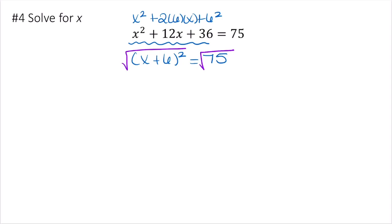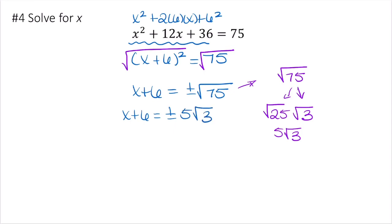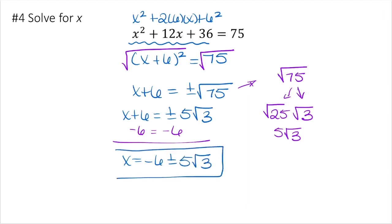Taking the square root of both sides gives x plus 6 equals plus or minus the square root of 75. Since 75 = 25 times 3, the square root of 75 simplifies to 5 times the square root of 3. So x plus 6 equals plus or minus 5 root 3. Subtracting 6 from both sides gives x equals negative 6 plus or minus 5 root 3, which is the fully simplified answer — the same you'd get from the quadratic formula.